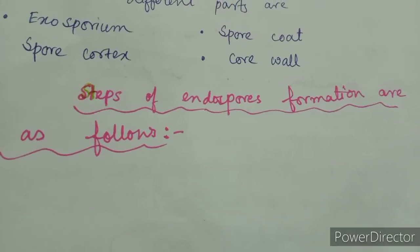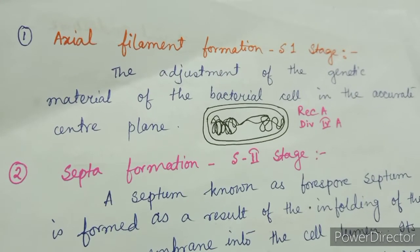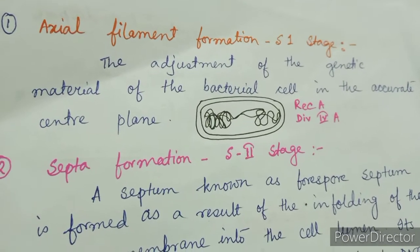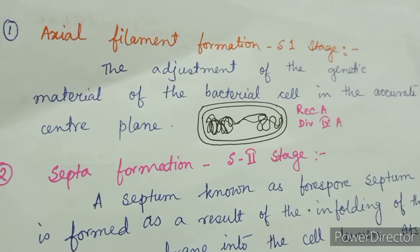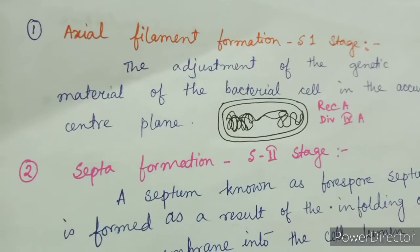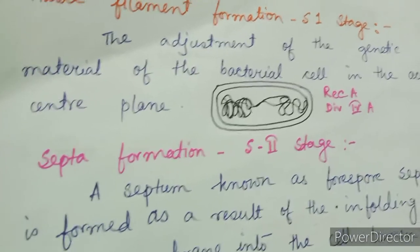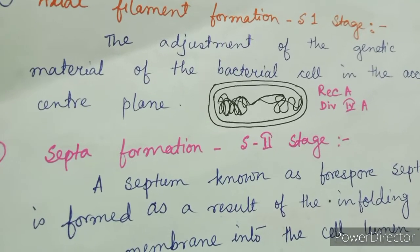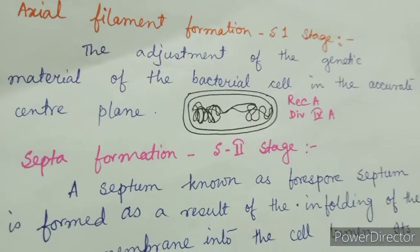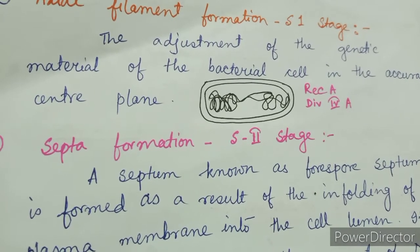The steps of endospore formation: The first step is axial filament formation, Stage 1. This involves the adjustment of the genetic material in the accurate central plane. Two enzymes are involved: RacA and Div4A. In this stage, the cell replicates and stretches the DNA into a long axial filament that spans the entire length of the cell.